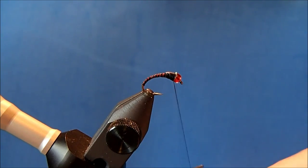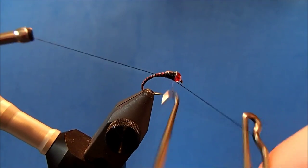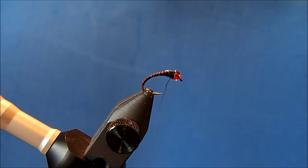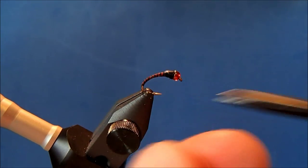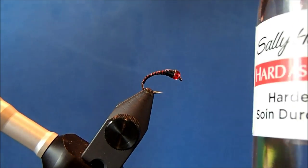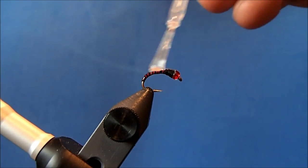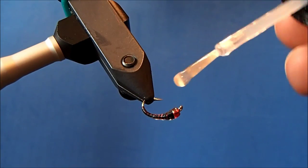Some whip finishes behind that bead. Now to finish this pattern, I'll take some Sally Hansen's Hard As Nails. The interesting point is once you apply some sort of coating, it really makes those hurl colors pop.